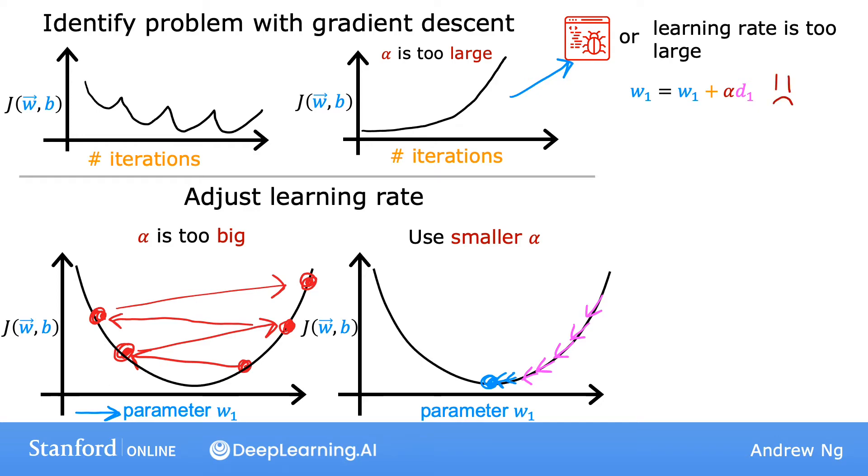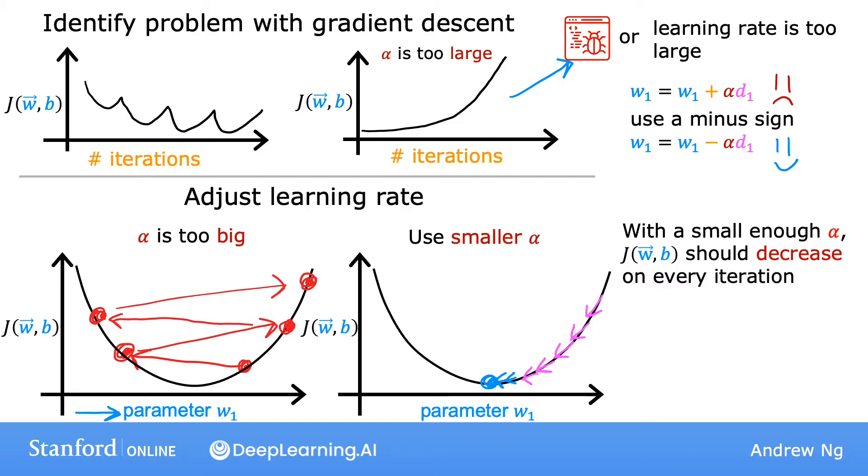So remember, you want to use a minus sign, so the code should be w1 updated by w1 minus alpha times the derivative term. One debugging tip for a correct implementation of gradient descent is that with a small enough learning rate, the cost function should decrease on every single iteration.